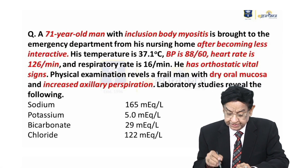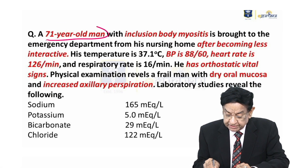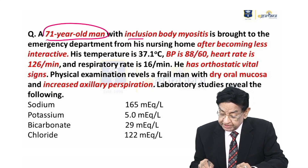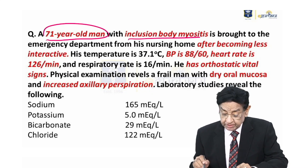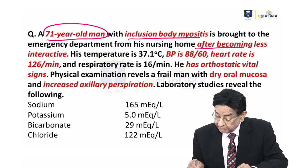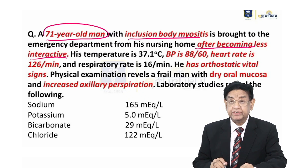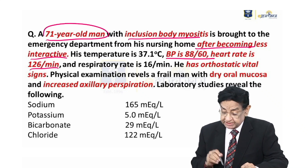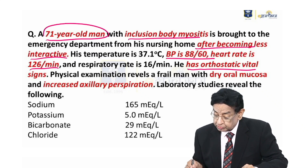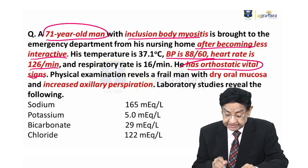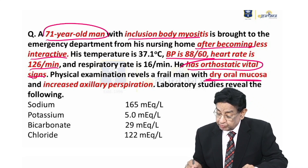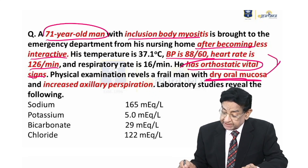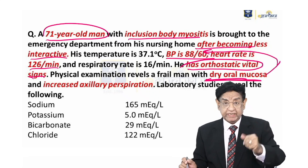Hello everyone. We have a 71-year-old elderly person, a patient with inclusion body myositis. He is brought in after becoming less interactive. His BP is low, heart rate is 126. He has orthostatic vital signs. Dry mucosa indicates dehydration, which could be the reason why his BP is low. That is one possibility.